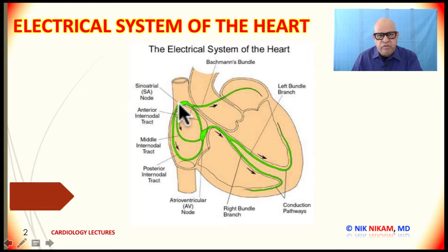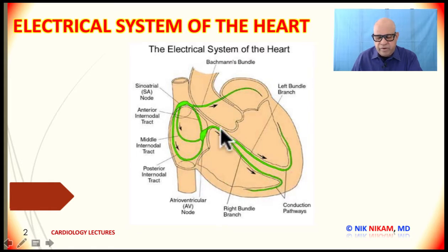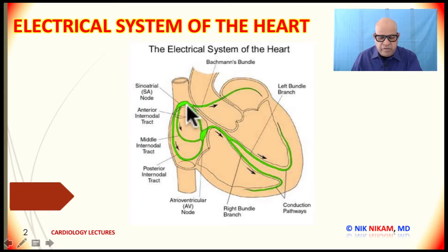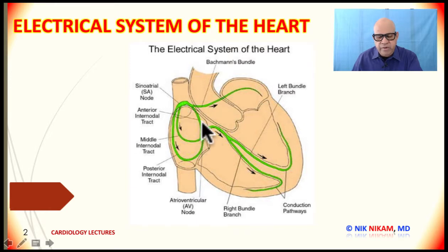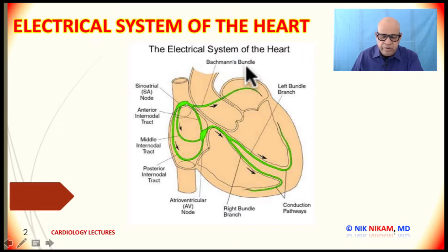The sinus node acts as a pacemaker — that is, it generates a spontaneous impulse at a range of 60 to 100 per minute, which activates the atria and the ventricles. This impulse is propagated through electrical channels with special properties. The sinus node is located at the junction of the superior vena cava and the upper part of the right atrium. From there, three inter-nodal branches connect the sinus node to the AV node in the right atrium, and another pathway goes through the left atrium to activate it, known as the Bachmann bundle. You may get a question about the Bachmann bundle, so please keep that in mind.